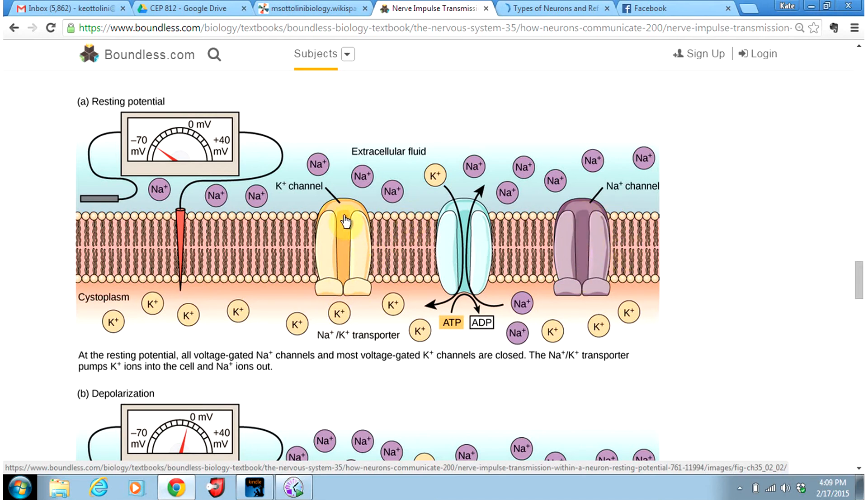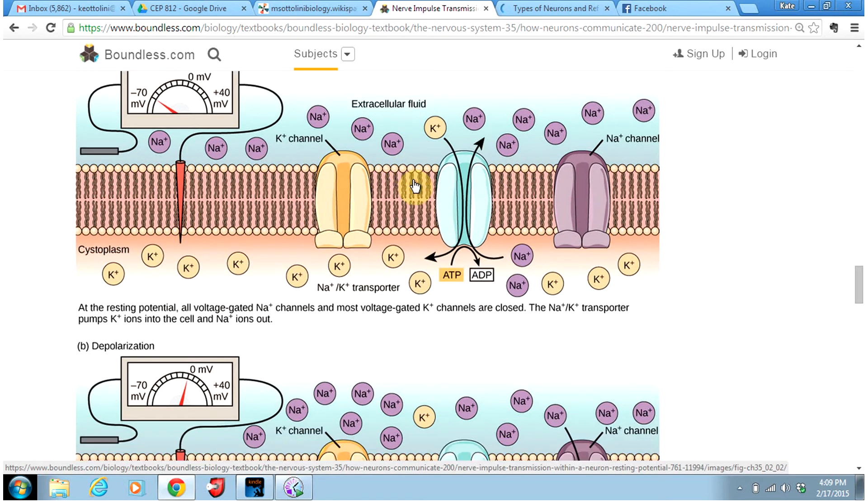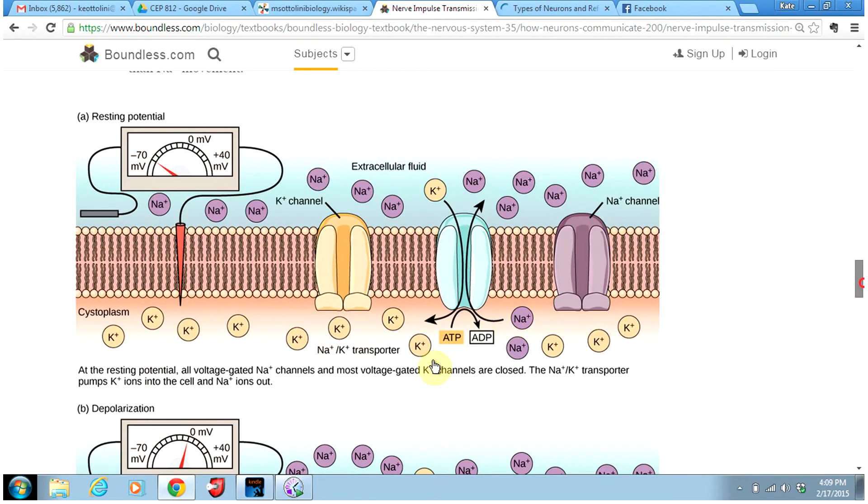Now, some of our potassium channels are leaky, meaning they're not totally closed. So they will allow some potassium to exit the cell by accident. But our sodium potassium pump is still going to pump more K plus in than exits through the leaky potassium channel. So we're still going to have more K plus on the inside of the cell.